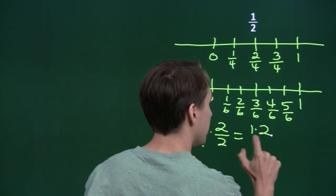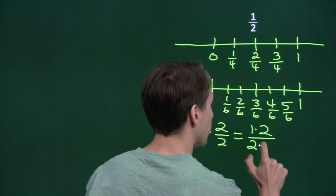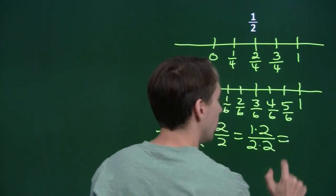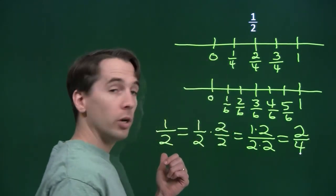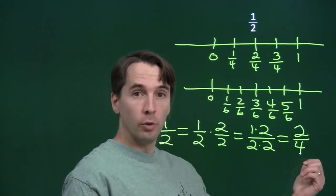2 over 2, of course, that just equals 1. And we know how to multiply fractions. The top, multiply the top, so we get 1 times 2. Multiply the bottom, so we get 2 times 2. 1 times 2, of course, is 2. 2 times 2 is 4. And sure enough, we see that 1 over 2 equals 2 over 4.